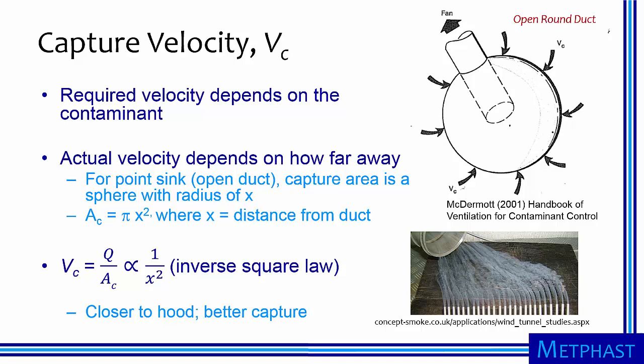This is depicted in the image where smoke is being used to visualize capture velocity entering an open duct. Capture velocity is low away from the duct, where the smoke follows curly paths, and then increases close to the duct opening, where the smoke begins to follow straight paths.